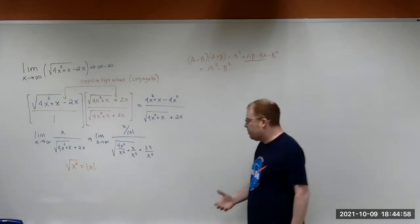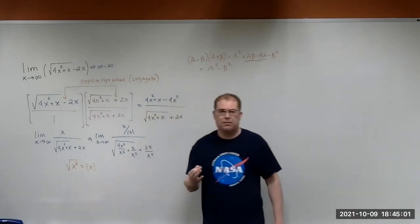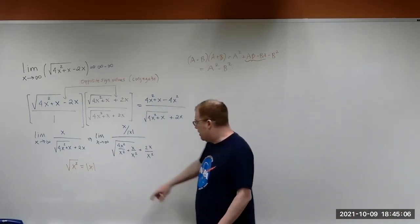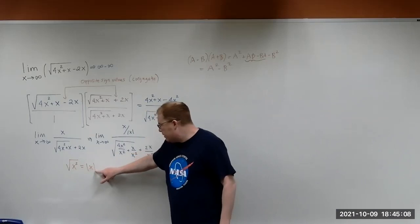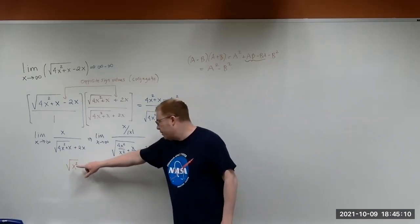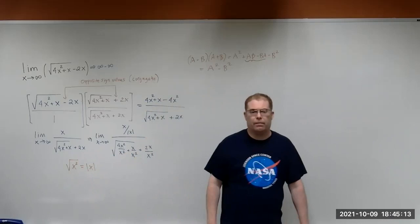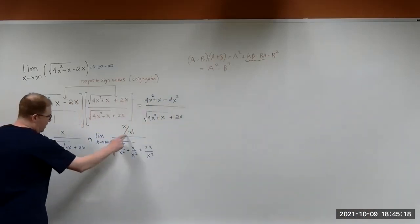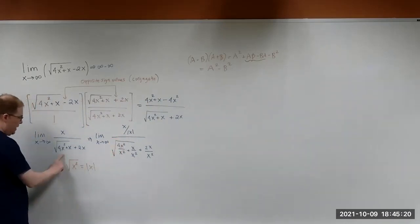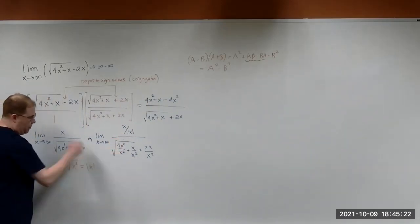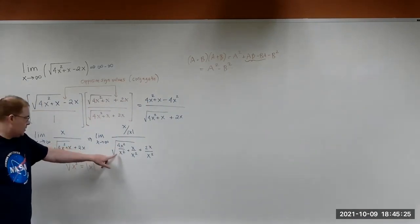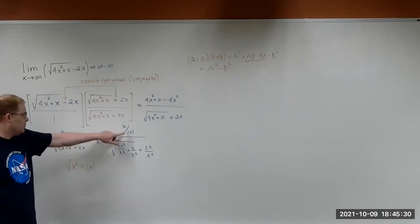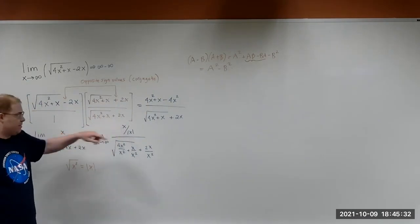The reason we use absolute value is because we don't know whether x is positive or negative, so we put the absolute value there so we can take the square root. Using that idea, we get x over the absolute value of x in the numerator, because x squared was underneath the square root and is now in the denominator — so we're dividing by this x.